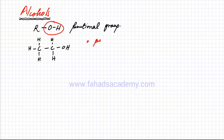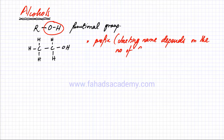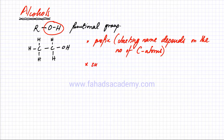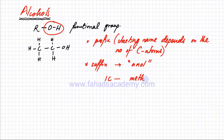The prefix — the starting name — depends on the number of carbon atoms present in the molecule. The ending name, or suffix, is always going to end with '-anol'. For example, if you have a molecule with one carbon atom, which we've already studied, the starting name is 'meth-' and the ending, since it's an alcohol, would be '-anol'.